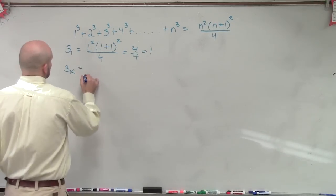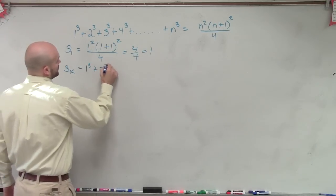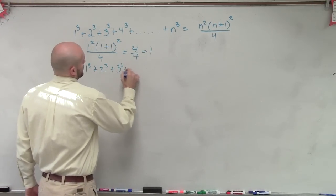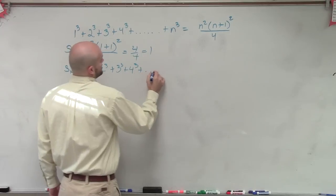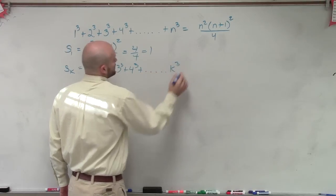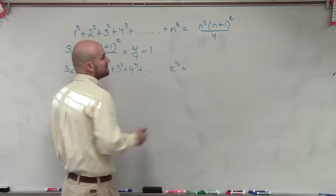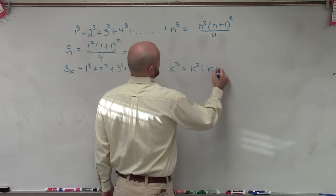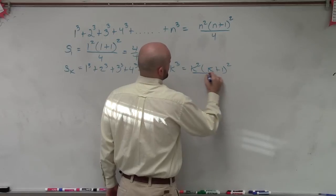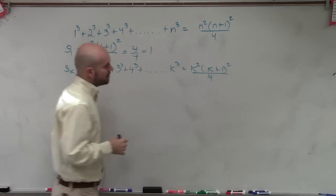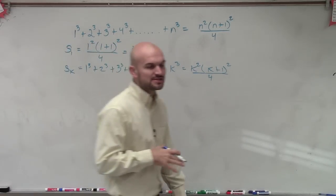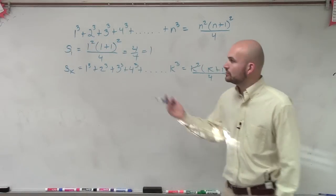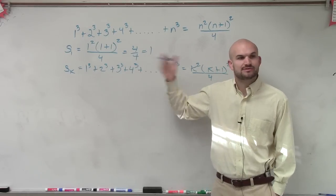So the sum of k would be 1³ + 2³ + 3³ + 4³ + ... + k³ equals the sum of k. And k is going to be k²(k+1)² all over 4. You're just pretty much changing this n. What we're going to do is we're going to prove this by using our k.